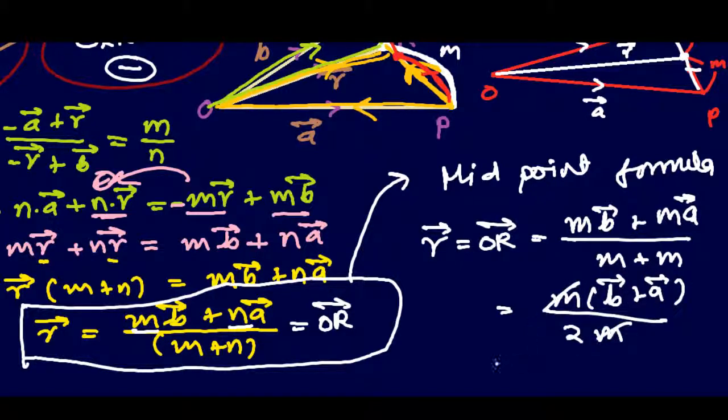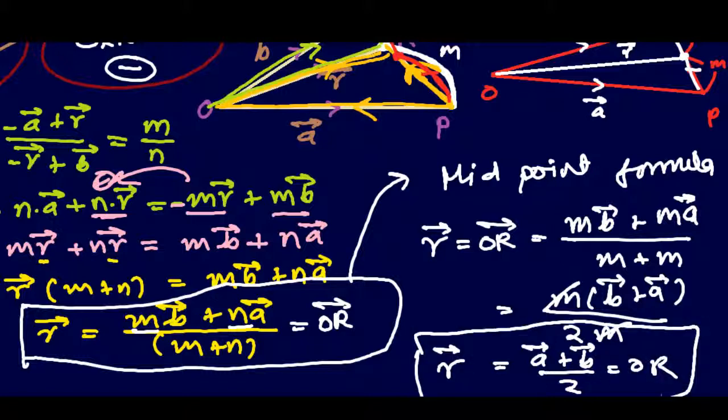M and N cancel and we're going to get vector A plus vector B divided by 2, that is our R or OR. So this is the midpoint formula.